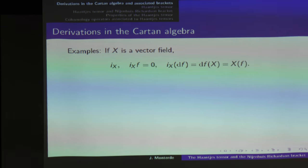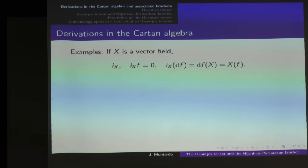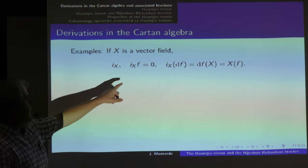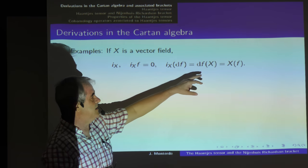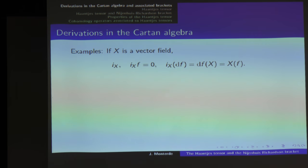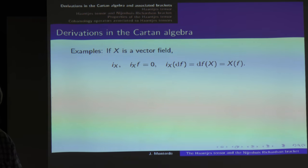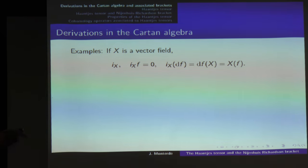Examples of derivations are the following. If X is a vector field, the insertion operator with respect to X, defined by vanishing on functions and acting on one-forms as the vector field acting on F, extended as a derivation — this is the first example, a derivation of degree minus one. Adolfo and I used the Cartan algebra as an example of a split supermanifold, where the odd and even dimensions are both equal to the dimension of the ordinary manifold, and derivations are nothing but the supervector fields.